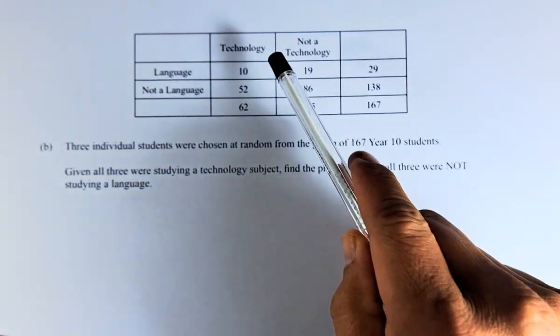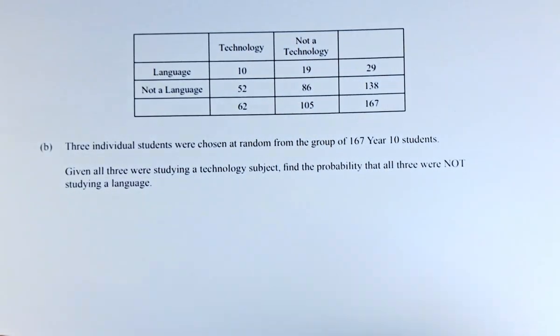On the row, we have language or non-language. In the column, we have technology or not technology. A total of 167 students.